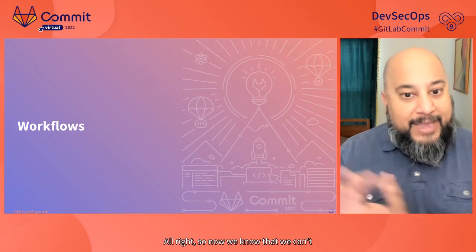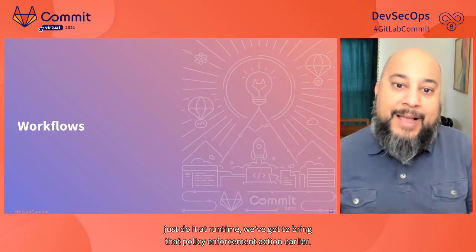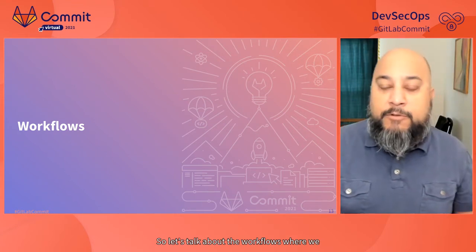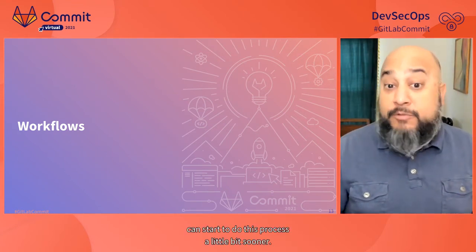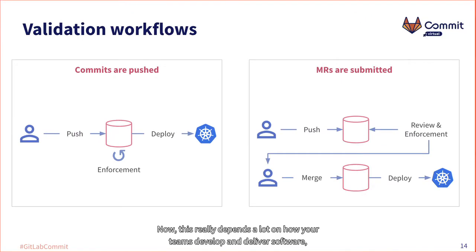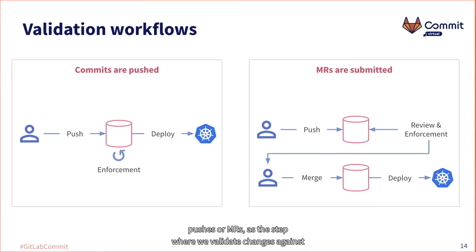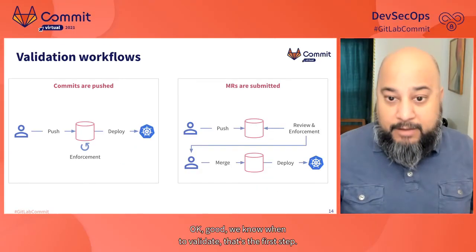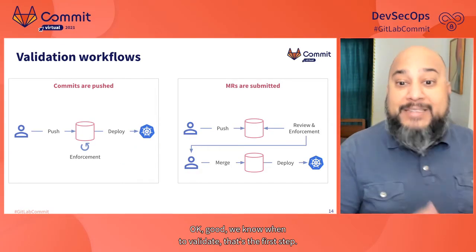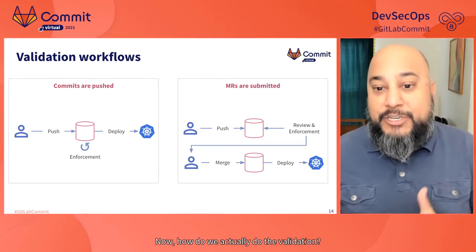We know we can't just do it at runtime — we've got to bring that policy enforcement action earlier. This really depends on how your teams develop and deliver software, but in most cases you're either pushing commits directly to a repo or using merge requests to review and accept changes. In either case, we can use those actions — pushes or MRs — as the step where we validate changes against existing policies. Now, how do we actually do the validation? It starts with tools.